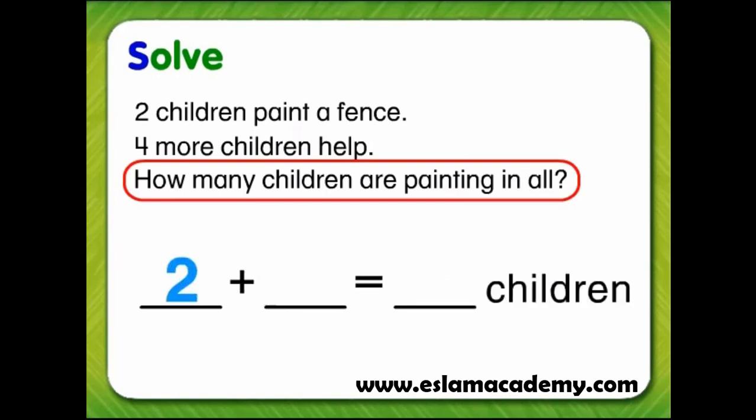Two children plus four more children equals six children.